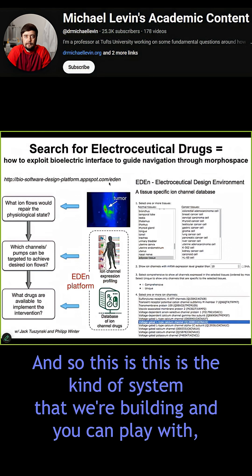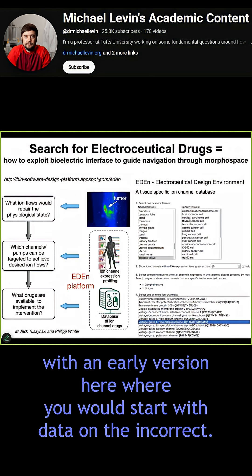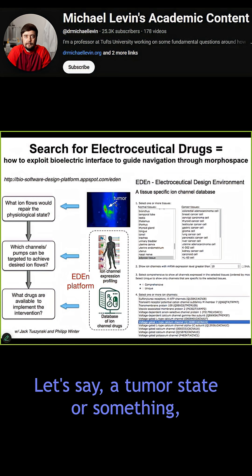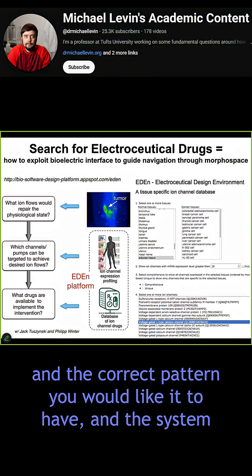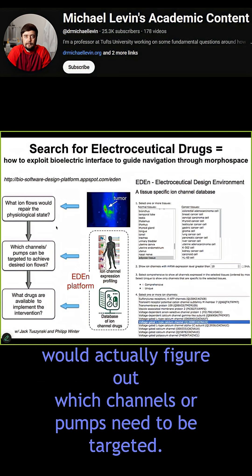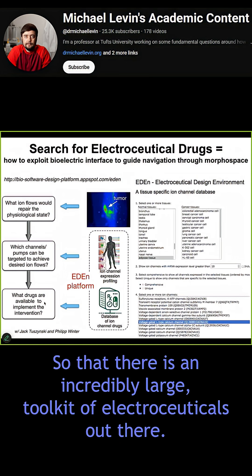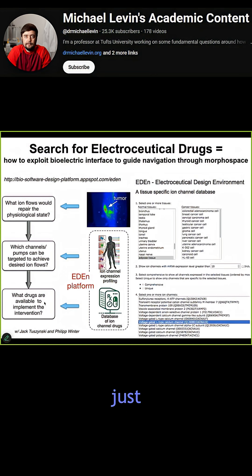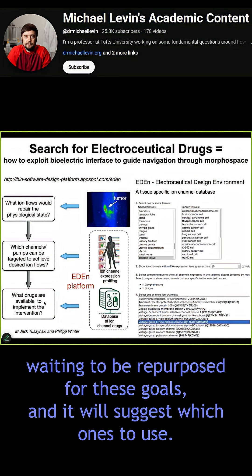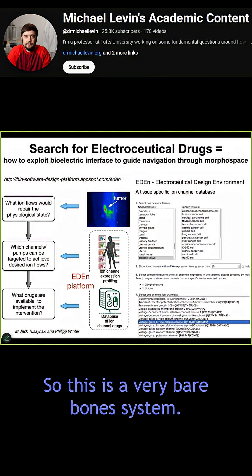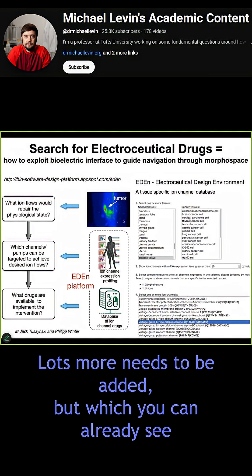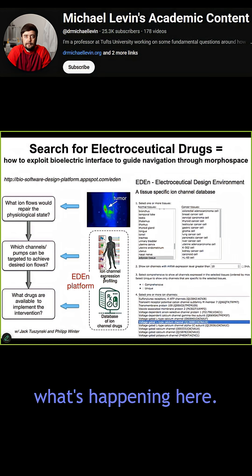So this is the kind of system that we're building. And you can play with an early version here, where you would start with data on the incorrect — let's say a tumor state or something — and the correct pattern you would like it to have. And the system would actually figure out which channels or pumps need to be targeted. That tells you exactly which drugs, and something like 20% of all drugs are ion channel drugs. So there is an incredibly large toolkit of electroceuticals out there which is waiting to be repurposed for these goals, and it will suggest which ones to use. This is a very bare-bones system, lots more needs to be added, but you can already see what's happening here.